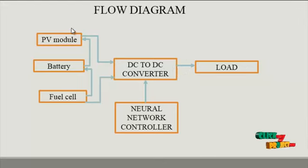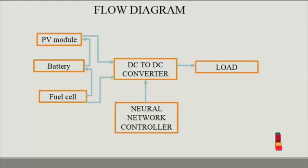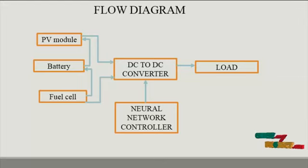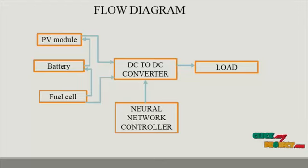In MATLAB Simulink, the PV module is generated using Simulink tools. The PV module generation involves various solar cells arranged in a manner such that irradiance is given to the solar cells, which then generate an electrical signal. That electrical signal is fed into a controlled voltage source, which delivers the corresponding DC voltage. The first source is a solar source, the second is a battery source, and the third is a fuel cell source.